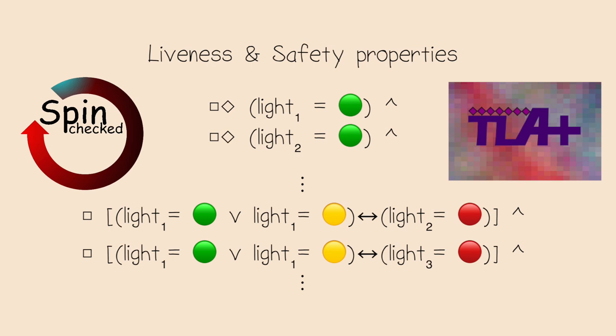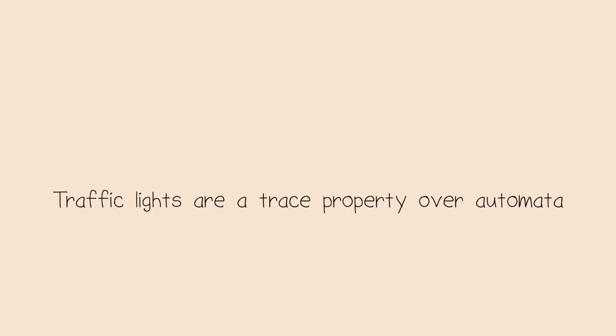Anyhow, I hope you understand the following sentence now. Traffic lights are a trace property over automata. We don't have to talk about implementations to understand what a valid traffic light system is, we only need to talk about the trace of the implementation. In a similar way, we don't really need to know how the brain is wired in order to define consciousness. But once we did, we can then analyze a trace of an implementation and see if it fulfills consciousness properties.